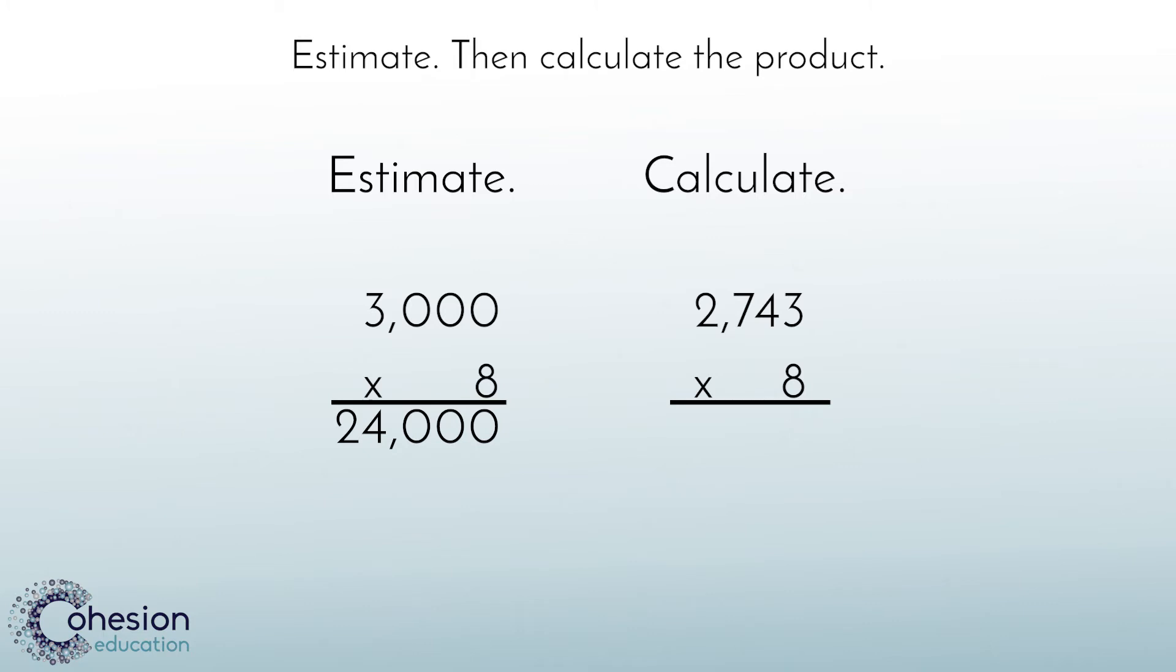Now that our numbers are lined up correctly, our first step is to multiply the ones. We know that the basic fact 8 times 3 is 24. In order to put 24 into our problem, we will put the 4 in the ones and regroup the two tens, writing the number 2 on top of the tens place.